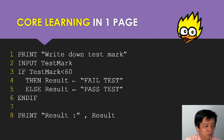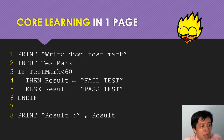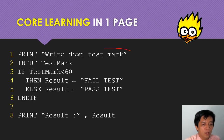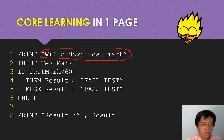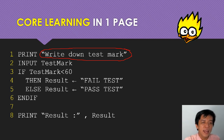Now you see this one - PRINT, write down - all of this is called Pseudocode. So PRINT, write down test mark. The computer always does the first sentence, second sentence, in order until the eighth line.